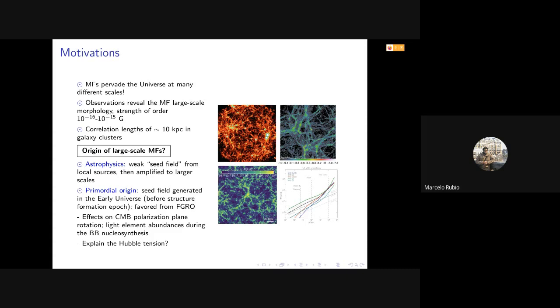So one of the questions we have regarding this is: which is the origin of these large-scale magnetic fields? There are basically two ways to try to understand these origins. One is from the astrophysical scenario, in which we propose a seed field, very weak, from galactic sources, amplified or regenerated to larger scales, probably with some dynamo action. The other way is the primordial hypothesis, in which seed fields have been generated fairly in the early universe, of course before the structure formation epoch.